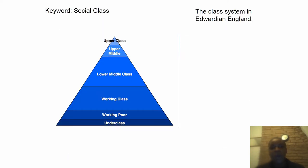Before we go into looking at the stage directions, I want to put a little context around the play. Our keyword is social class. The class system in Edwardian England, as the pyramid shows, had at the very top the upper class, then the middle class, then the lower middle class, then the working class, then the working poor, and then the underclass — showing the different divisions in society at that time.